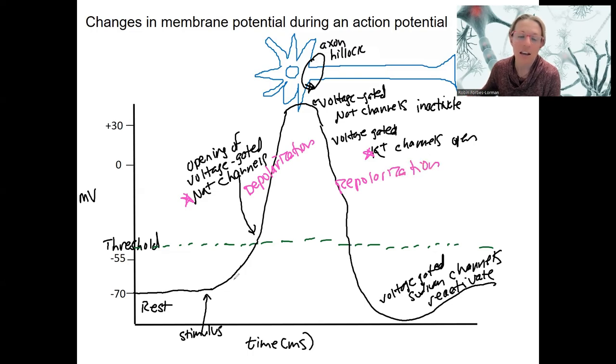Potassium flowing in is repolarization. This here is rest. This here is depolarization, but not a part of the action potential yet. This down here is actually called hyperpolarization because we're going below rest. And then we go back to rest.